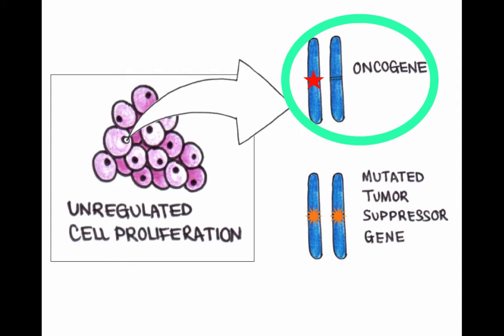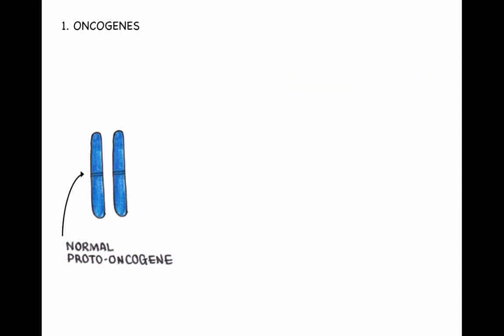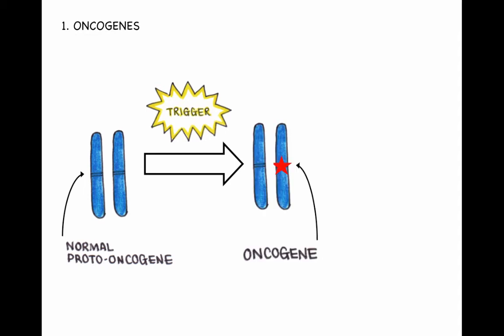Let's look at oncogenes first. Normally, within the chromosomes of our cells, we have proto-oncogenes. These encode for a wide range of proteins, including those that regulate cell growth and differentiation. A trigger causes these proto-oncogenes to become abnormal oncogenes.